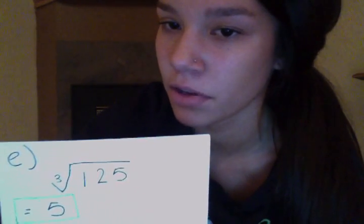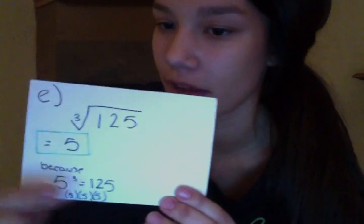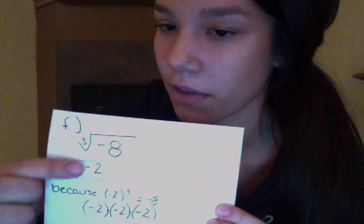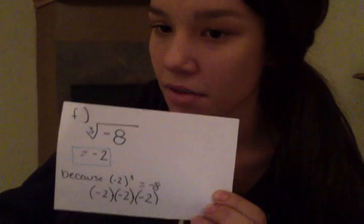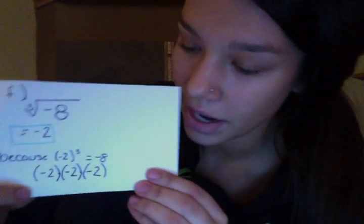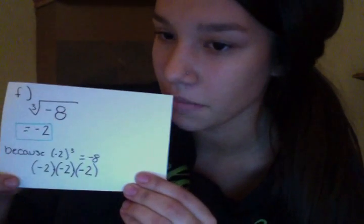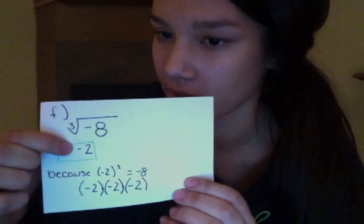Then you want to figure out the cube root of 125 — what cubed equals 125. That would be 5 because 5 times 5 times 5 gives you 125. On the last one you want the cube root of negative 8. You can have a cube root of a negative number because negative 2 times negative 2 times negative 2 gives you negative 8, so the answer is negative 2.